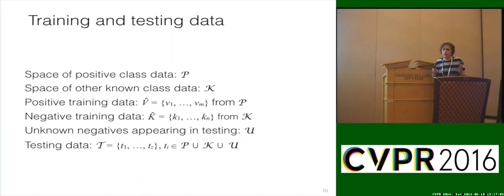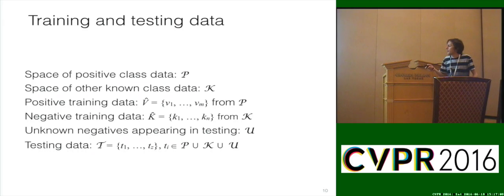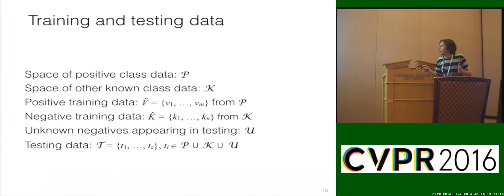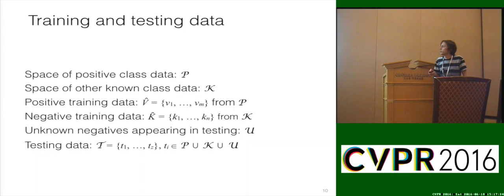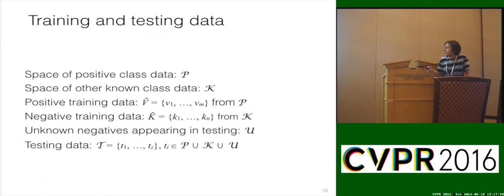To recap the variables: the space of positive class data is P; space of other known class data is K; positive training data is the set V-hat drawn from P; negative training data is K-hat, drawn from all known negatives; unknown negatives appearing in testing are denoted U — because it's open set, we have these again. The testing data is just the union of all those sets: known positives, known negatives, and some sampling of unknowns.